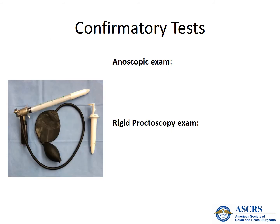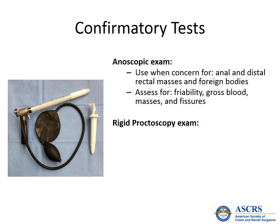There are many different types of anoscopes. It is important to seek a light source with this tool. The anoscope evaluates the anal canal and distal rectum, and should be used when there is concern for anal and distal rectal pathology. When using the anoscope, look for friability of the mucosa, gross blood, masses, and fissures.